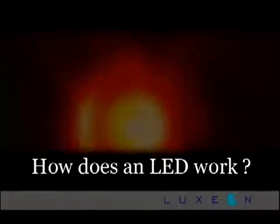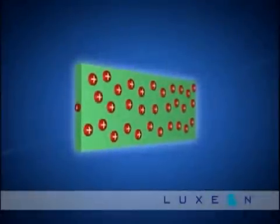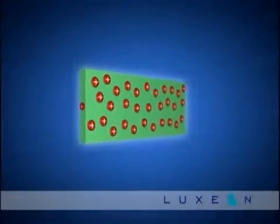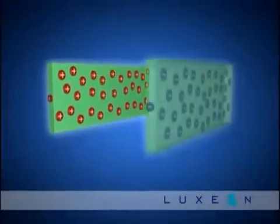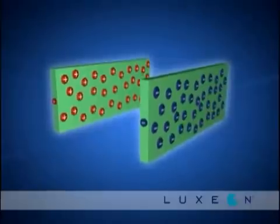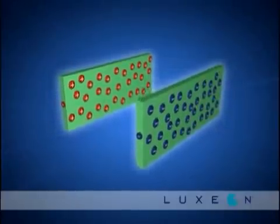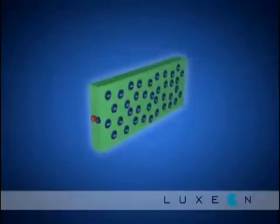In simple terms, here's how an LED works. An LED is a basic semiconductor device. P-type semiconductor material containing positively charged carriers called holes is combined with n-type semiconductor material containing negatively charged carriers called electrons to create a diode.